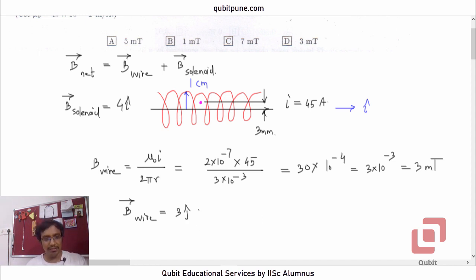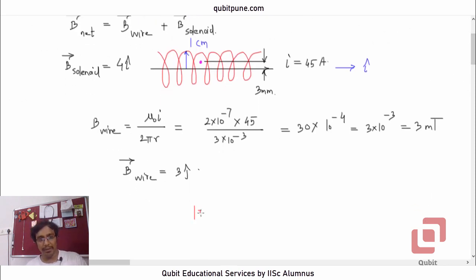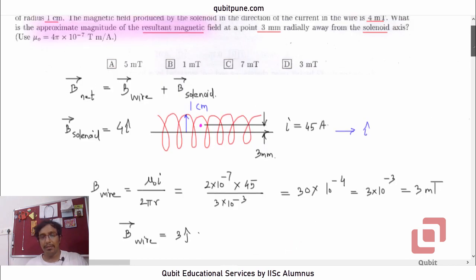Now, what do they want? They want us to determine the approximate magnitude of the resultant magnetic field. How to determine that? To determine the magnitude of the resultant magnetic field, we simply are required to find the magnitude of 4 i cap due to solenoid plus 3 j cap. And it goes without saying that the magnitude is going to be 5 millitesla. The magnitude is going to be 5 millitesla. So the answer is A.